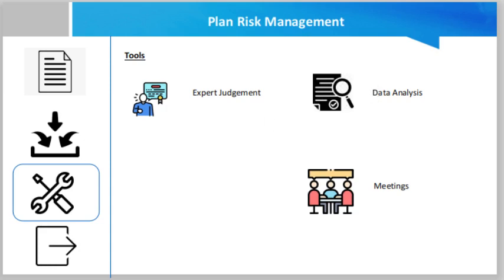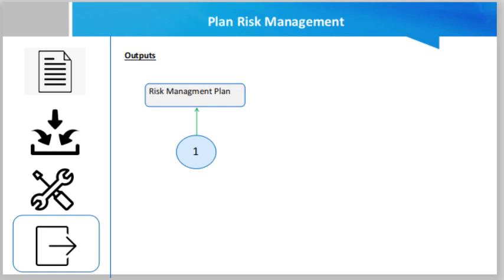Meetings are also a tool — the risk management plan may be developed as part of the project kickoff meeting, or a specific planning meeting may be held. Attendees may include the project manager, selected project team members, key stakeholders, or team members responsible for managing the risk management process. The output of this process is the risk management plan, which is a component of the project management plan that describes how risk management activities will be structured and performed.